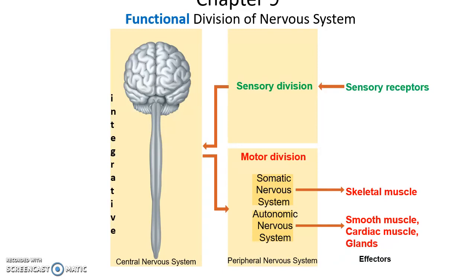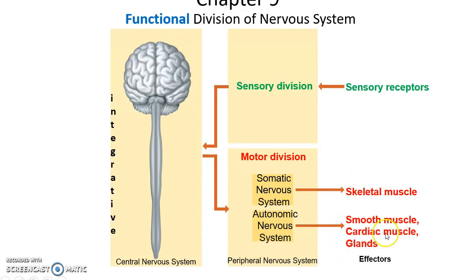We can also divide the nervous system functionally. We have the sensory division, where sensory receptors detect some sort of stimulus, transmit that to the sensory neurons, and then send the information to the central nervous system. The central nervous system is the integrative region where information is processed and a response is decided. Then we have the motor division, where signals are sent from the central nervous system out to effectors — either the somatic nervous system affecting skeletal muscles, or the autonomic nervous system affecting smooth muscle tissue, cardiac muscle tissue, and glands.